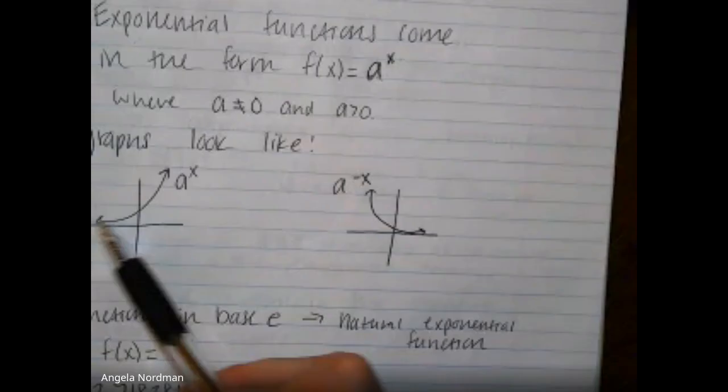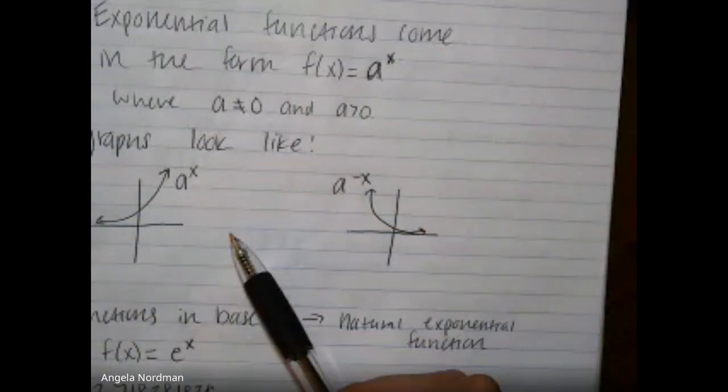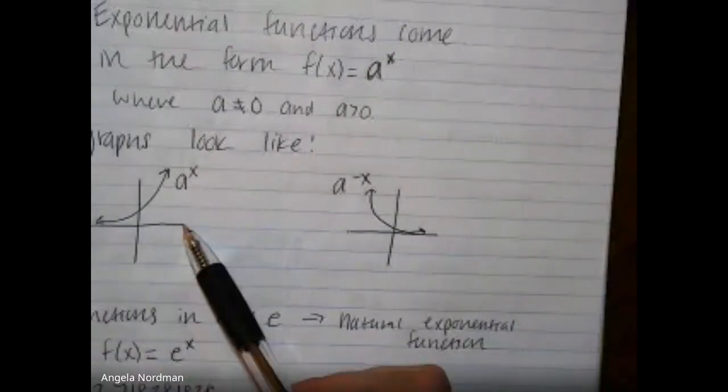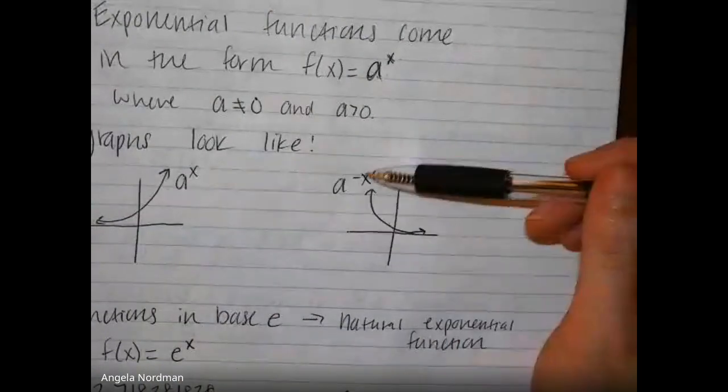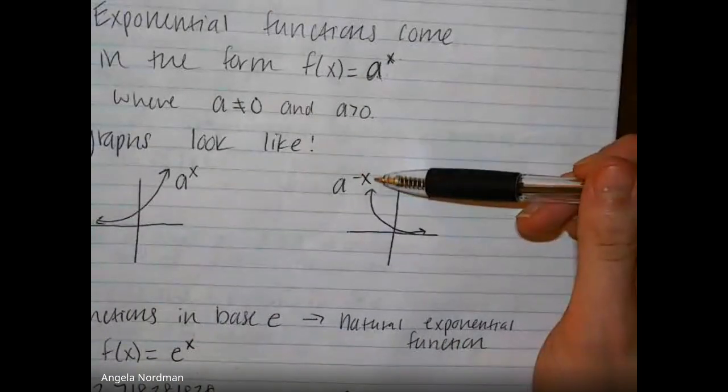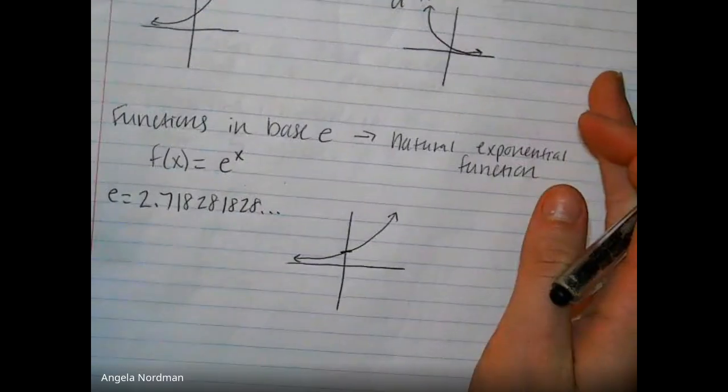What these functions look like is we have this curve that has an asymptote horizontally. The standard function or the parent function is going to have one that's along our x-axis, so the function hugs this x-axis and then goes up when it's a positive exponent. Negative exponents are going to mean that we start high and then come down and hug that x-axis.